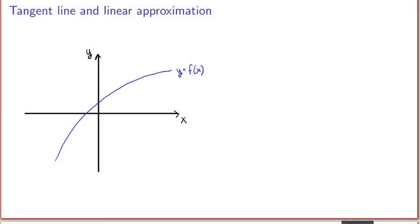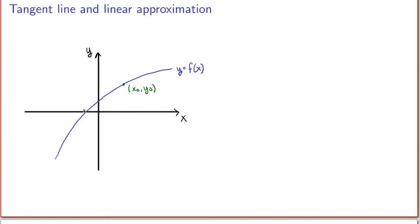Let me start by recalling a key concept of differential calculus. Consider a function of a single variable, f of x, and sketch its graph — you end up with a curve in the xy plane. Now suppose you're interested in the behavior of the function near a point (x₀, y₀) on the curve. We know from differential calculus that the function is very well approximated by a line, which is called the tangent line to the graph of the function.